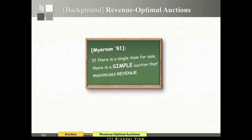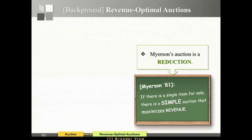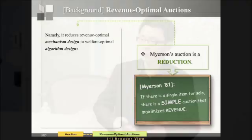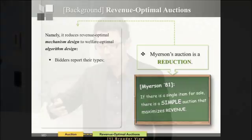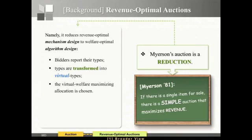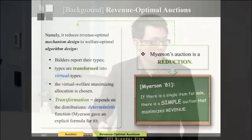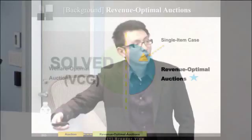Arguably, eBay is running a special case of Myerson's auction every day. I want to think of Myerson's result as a reduction that reduces a mechanism design problem — with truthfulness and incentive constraints — to a purely algorithmic problem. Myerson reduces finding a revenue-optimal auction to just computing a welfare-optimal allocation. The transformation is deterministic and given by an explicit formula — the virtual value function. For welfare we can solve arbitrary settings; for revenue, we only know how to handle a single item. So the natural question is: can we sell many items together?